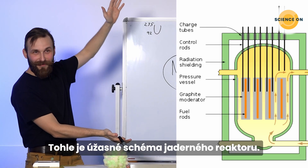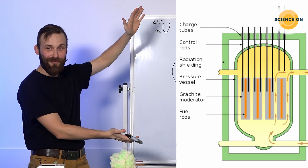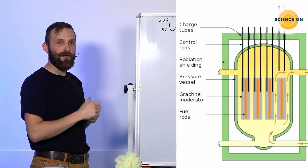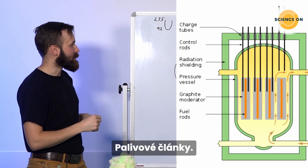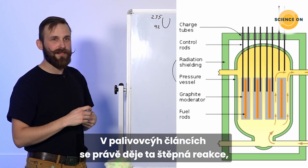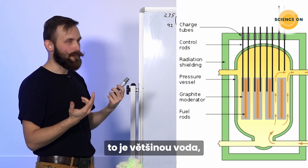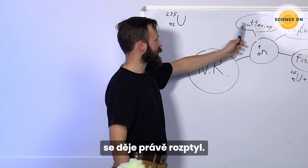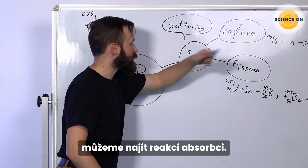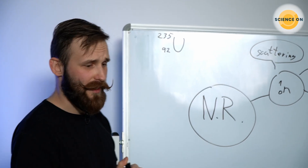This is the schematic picture of a nuclear reactor. In the fuel rods, the fission reaction is taking place. In the moderator, which is mostly water, the scattering reaction is there. And inside the controlling rods, the neutron capture is there.